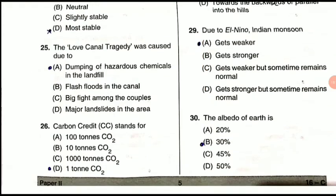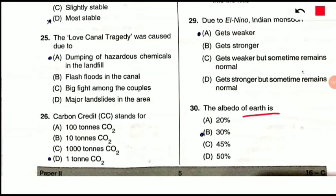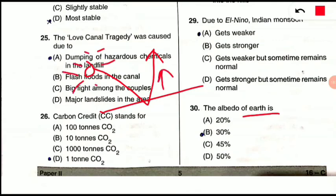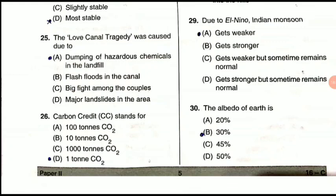Question 30: The albedo of Earth is what? Albedo is the percentage of light reflected from a surface. The albedo of Earth means — when sunlight reaches the Earth, how much percentage is reflected back — it is 30%. That brings us to the end of this video. Hope you learned something new. Don't forget to like and subscribe the channel for further updates. See you in the next video — keep smiling and believe in yourself.